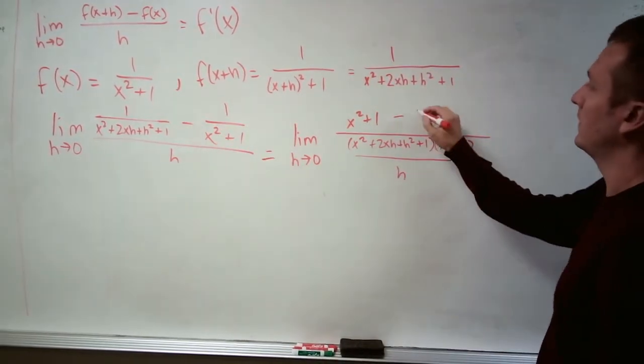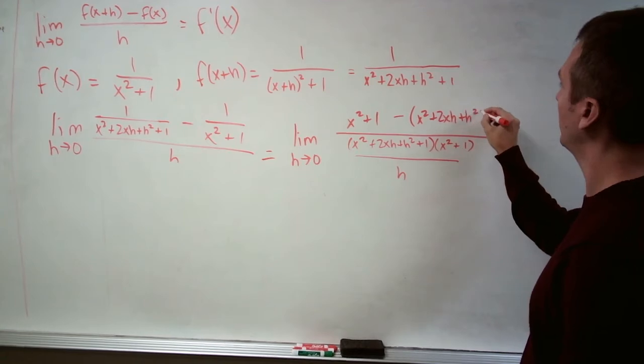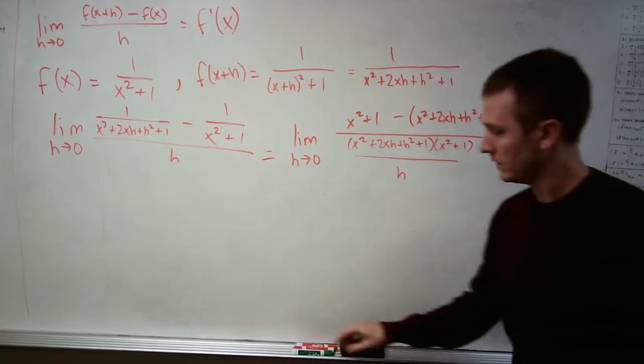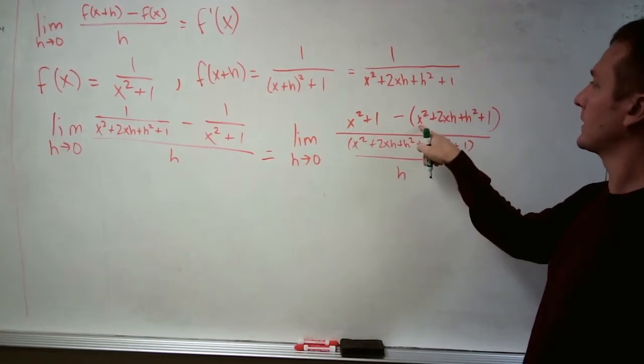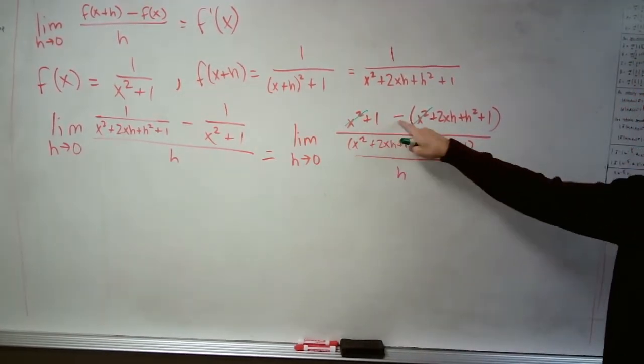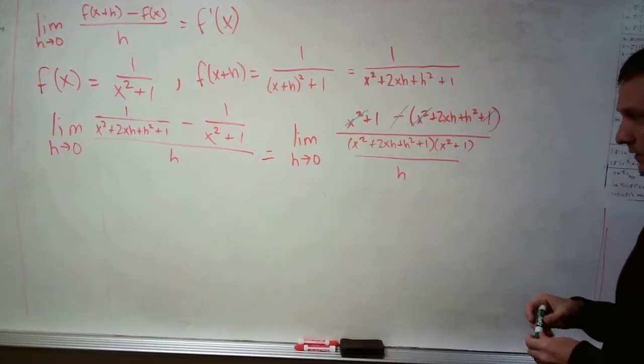And we're going to get a few terms that cancel out quite nicely. So let's see what we get. We get x squared minus x squared, we get 1 minus 1.